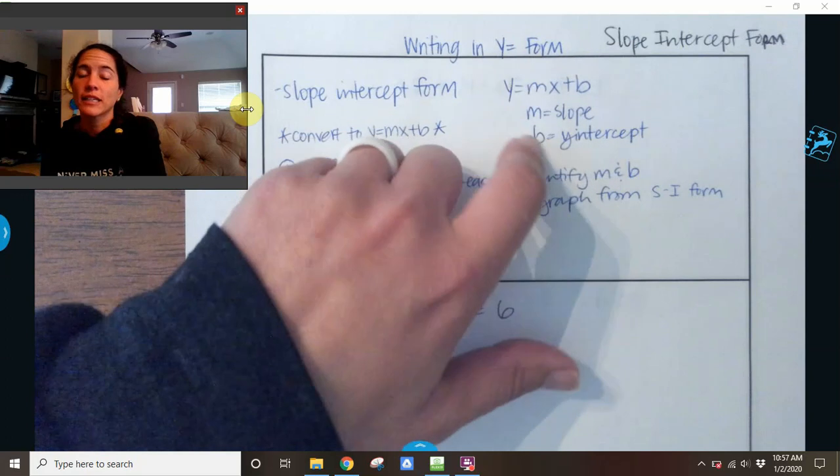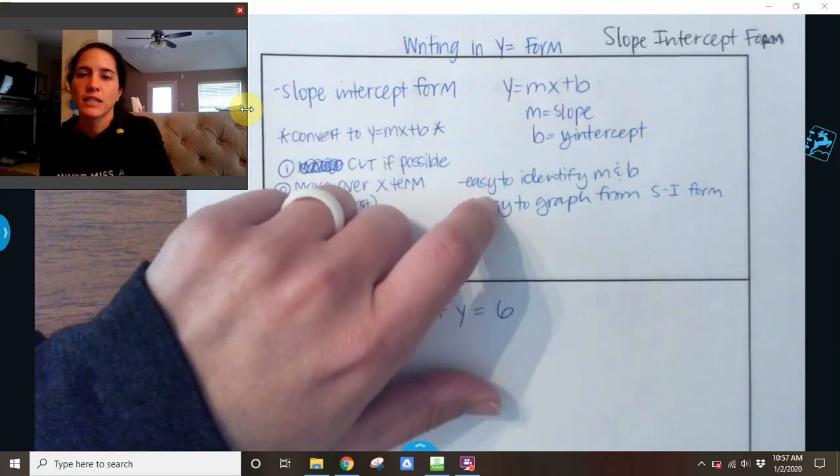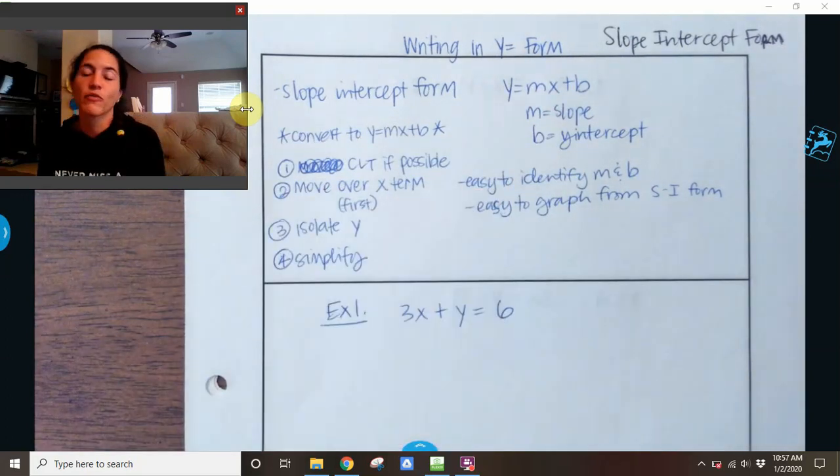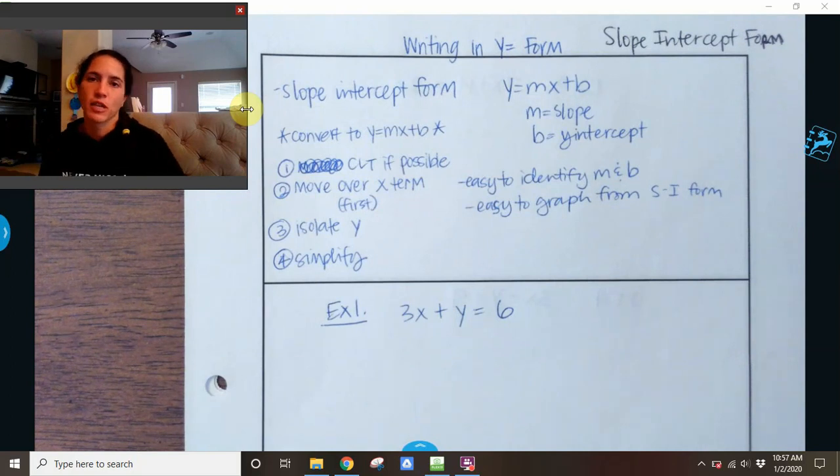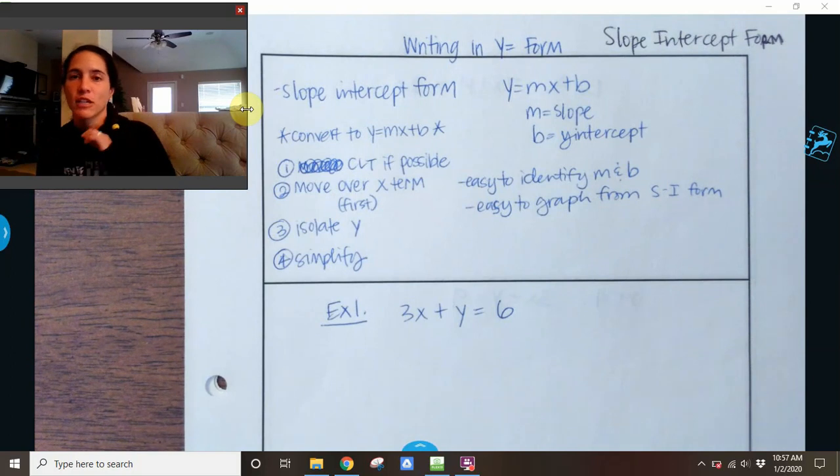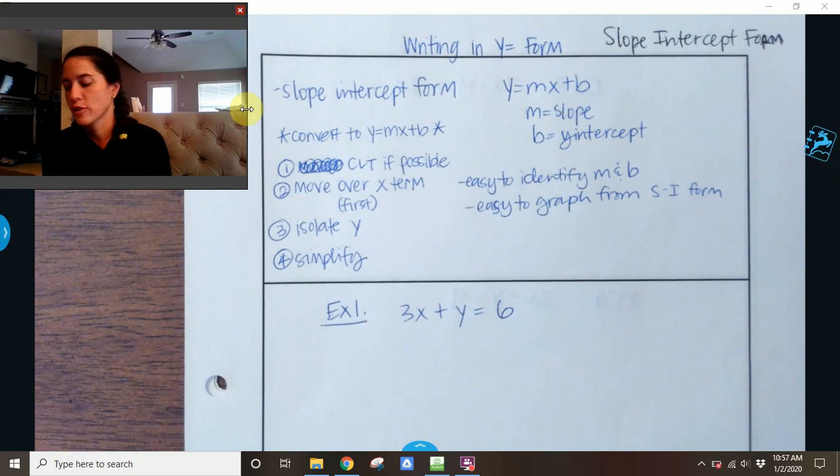This form is widely used and very popular because it's easy. Once you have a slope intercept form, it's easy to identify the slope and the y-intercept, and it's easy to graph a line from slope intercept form, which are all important pieces to the equation.